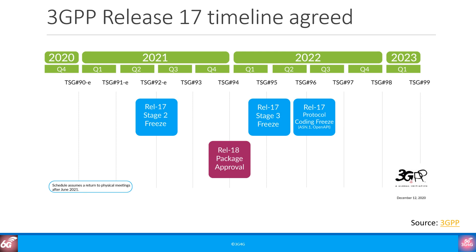Because of the ongoing pandemic, 3GPP had to delay the currently ongoing work of Release 17. In a press release in December, they announced that they are now anticipating the completion of Release 17 in 2022, with a freeze in March of 2022 followed by coding protocols frozen and stable in June of 2022. The new timeline was created based on the assumption that 3GPP can go back to in-person meetings in the second half of 2021, after having moved to virtual or e-meetings amid the global pandemic during 2020.